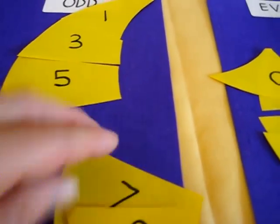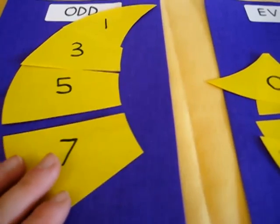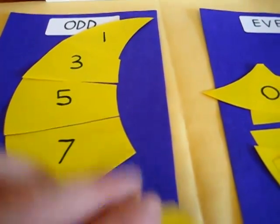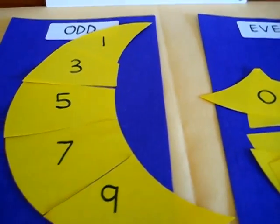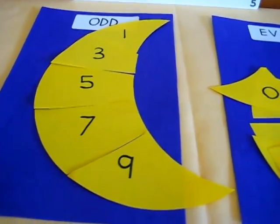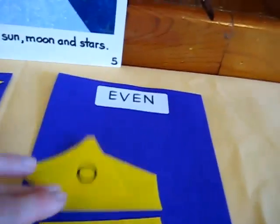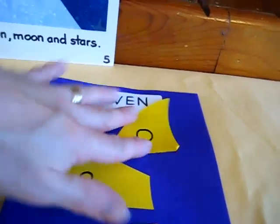So this is also good for teaching skip counting and also biggest to smallest numbers. There's our little moon in our odd sky. And then you go on to make your little even moon.